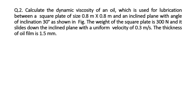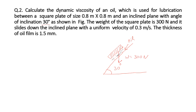The second question involves an inclined plane. Visualize the setup: we have an inclined plane at 30 degrees, with a square plate resting on it, and between the square plate and the inclined plane there is some oil. The weight of the plate is 300 newton. It slides down the inclined plane with a uniform velocity of 0.3 meter per second, and the thickness of the oil film is 1.5 mm.